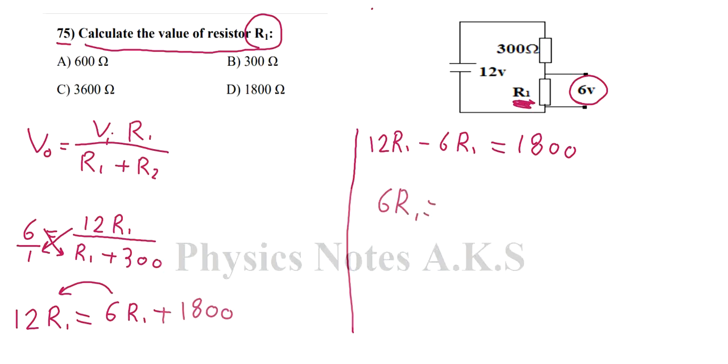So R1 will give me 300 ohms. So the answer is B here, we got 300 ohms.